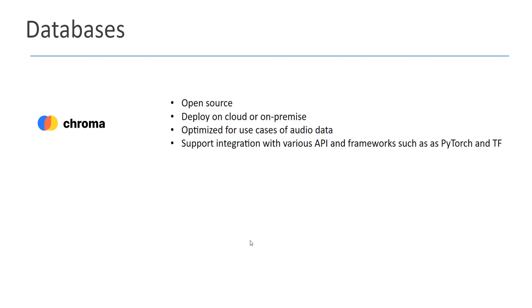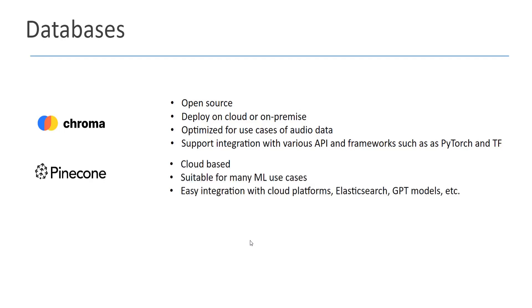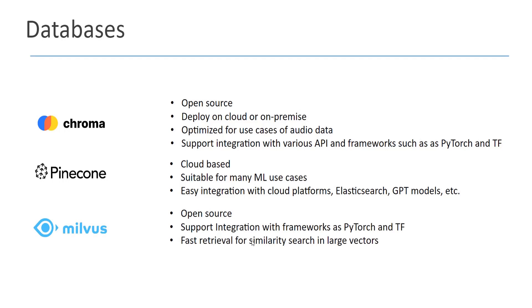What are the databases we can use as vector databases? One common open-source option is called Chroma. It can be deployed on cloud or on-premise and is optimized for various use cases including audio data. It supports integration with frameworks such as PyTorch or TensorFlow. Another example is Pinecone, which is really famous. It's not open source and is cloud-based. It's suitable for most machine learning use cases and has easy integration with cloud platforms, Elasticsearch, GPT models, and so on. We also have Milvus, which is open source. It supports integration with frameworks such as PyTorch and TensorFlow and is good for fast retrieval and similarity search in large vectors.